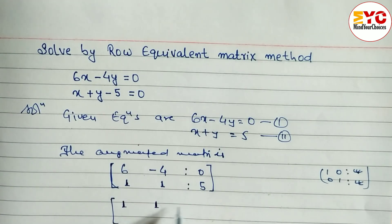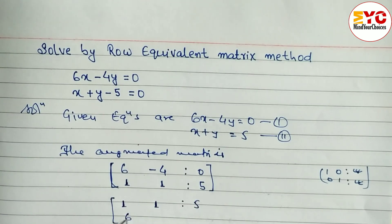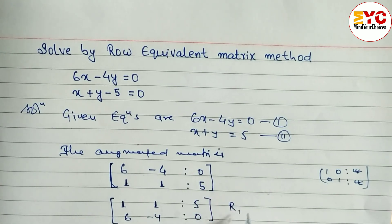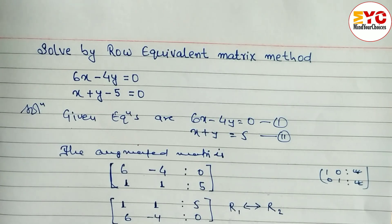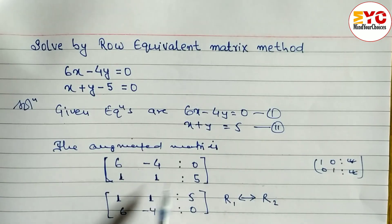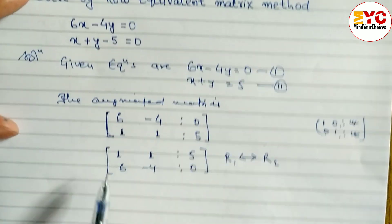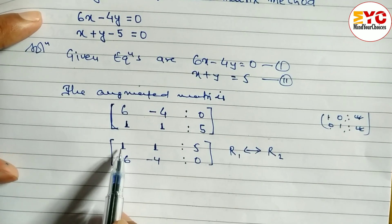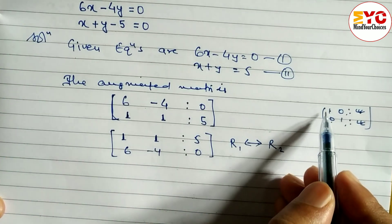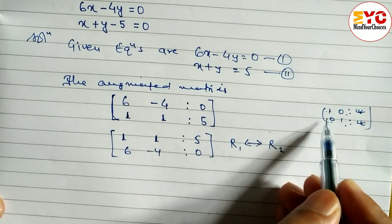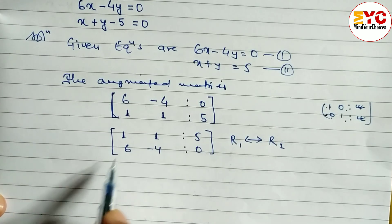After interchanging R1 and R2, the matrix becomes: row one is [1, 1, 5] and row two is [6, minus 4, 0]. We interchange because we need to convert to the form [1, 0; 0, 1], and now we have the leading 1 in row one.